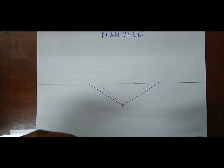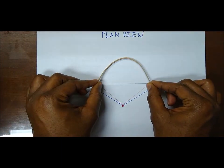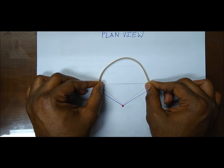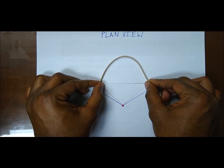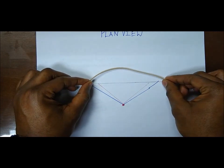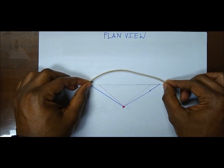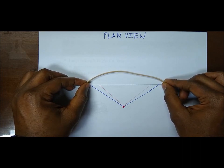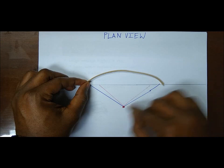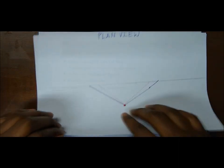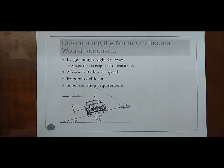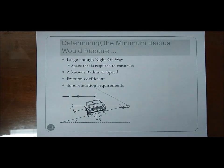We do not desire a really sharp curve because vehicles wouldn't be able to travel on the road, especially at high speeds. We want to make sure curves are designed properly so that vehicles can safely travel at the design speed. This means there should be an associated minimum radius such that the curve is suitable for the design speed, requiring a large enough right-of-way, known radius, speed friction coefficient, and superelevation requirements.